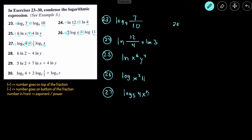Number 28: we start with ln and set up a fraction. There's a positive, so the 2 goes on the top. The 6 in front of the ln becomes the power, so it's 2 raised to the power of 6. There's a subtract or minus, so y goes on the bottom of the fraction, and the 4 becomes y's power: y⁴. So if it's subtract, the argument goes on the bottom; if positive, it goes on top; and a coefficient in front becomes the exponent.